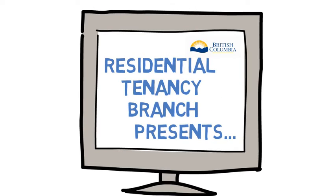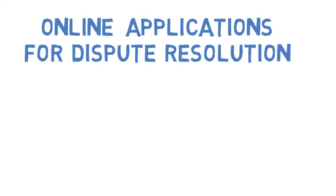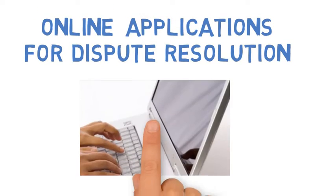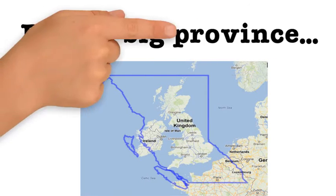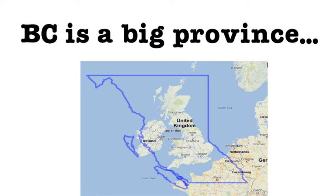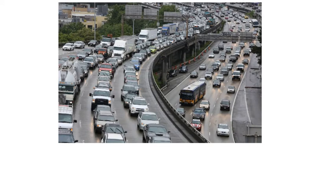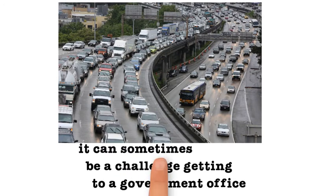The BC Residential Tenancy Branch presents an information video on online applications. Did you know that British Columbia is the third largest province in Canada? It's bigger than all of the United Kingdom. In a province this vast, it can sometimes be a challenge getting to a government office for tenancy help.